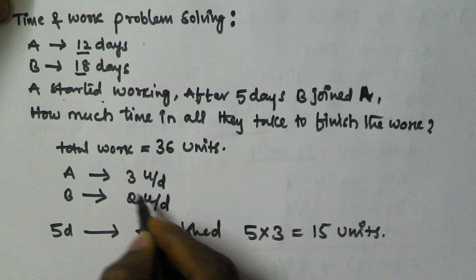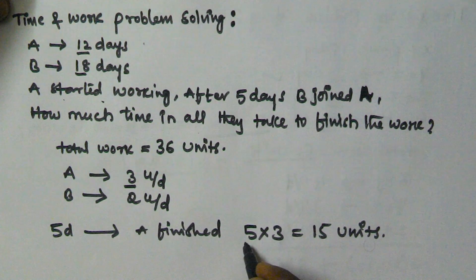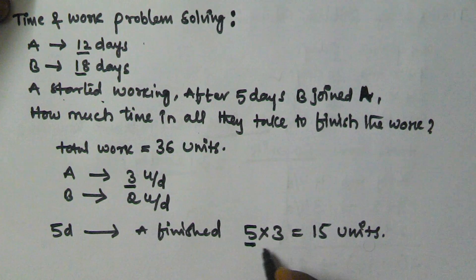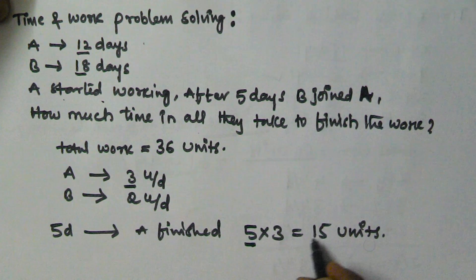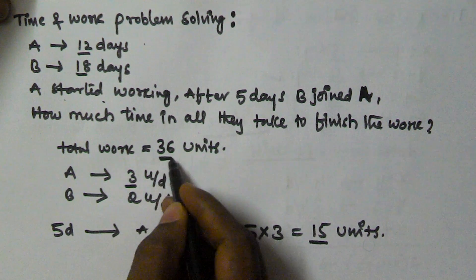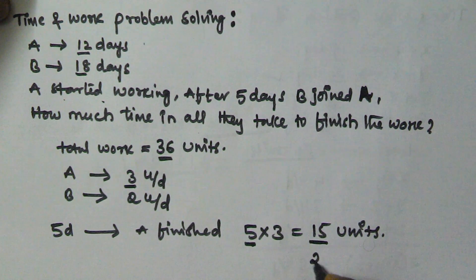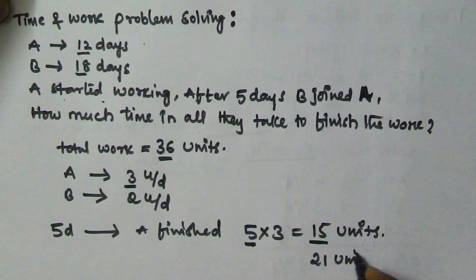The total work is 36 units. A finishes 3 units per day, so in the first five days he worked alone and finished 15 units. The total work is 36 units, which means the remaining work is 21 units.